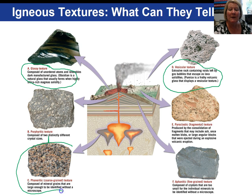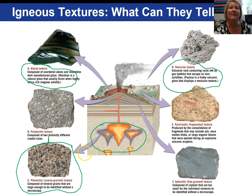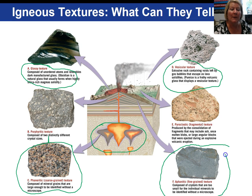A phaneritic texture forms deep in the earth as the magma cools very slowly. Phaner is a term that means visible, so the minerals in a phaneritic igneous rock are visible to the unaided eye. On the other hand, rapid cooling near or at the earth's surface produces a very fine-grained texture we call aphanitic. The prefix 'a' in the word aphanitic means 'not,' so the mineral crystals are not visible without a microscope in an aphanitic textured igneous rock.